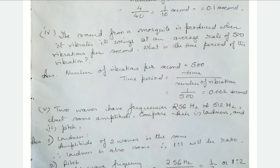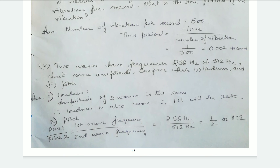Numerical 5: Two waves have frequencies 256 Hz and 512 Hz but the same amplitude. Compare their loudness and pitch. Since the amplitude is the same, loudness ratio is 1:1. Since frequencies are different, pitch ratio P1 to P2 equals F1 to F2, which is 256 to 512, simplifying to 1:2.